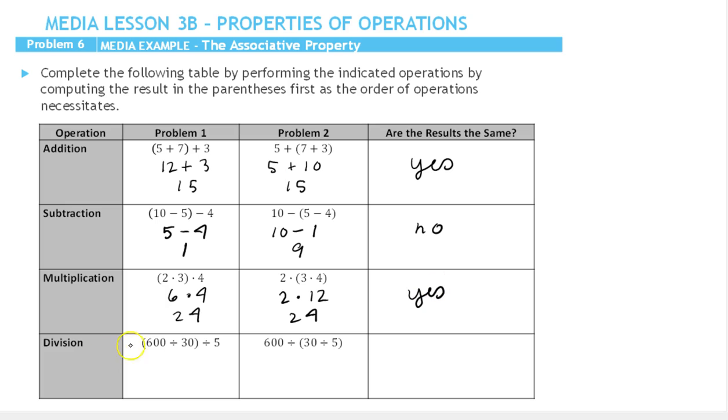Last problem is division. 600 divided by 30 is going to be 20. 20 divided by 5 is 4. Here we're going to do 30 divided by 5 first. 30 divided by 5 is 6. And 600 divided by 6 is 100. So are these answers the same? And the answer is no.